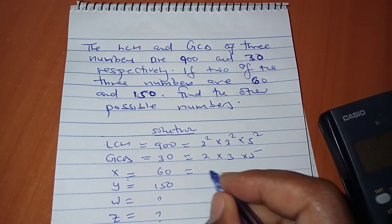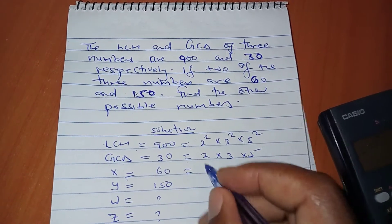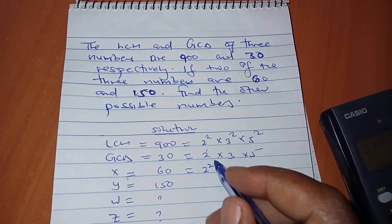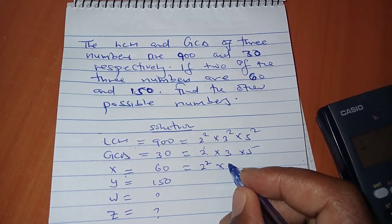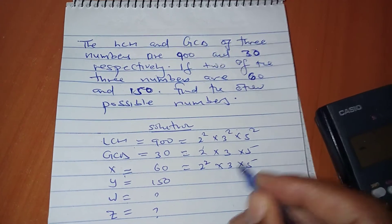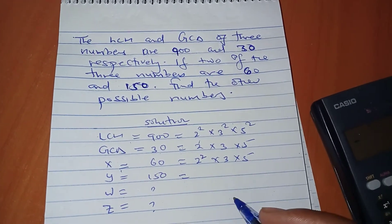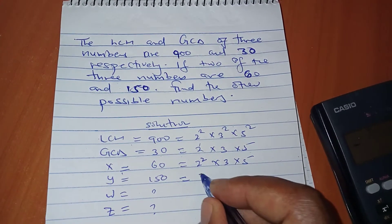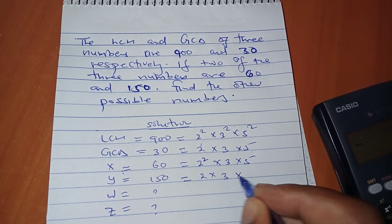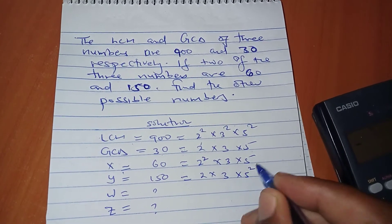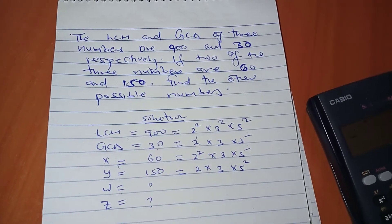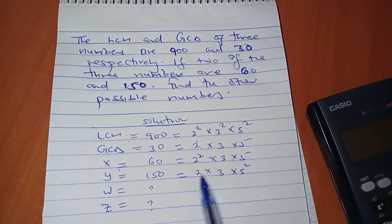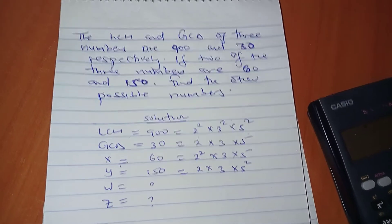Factors of 60 - we know it's 30 times 2, so we have 2² × 3 × 5. For 150, we know it's 30 times 5, so we have 2 × 3 × 5².